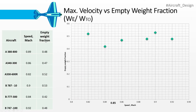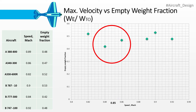Moving to maximum velocity versus empty weight fraction: as a thumb rule, empty weight fraction should range from 0.3 to 0.7. For a large passenger aircraft it lies within 0.4 to 0.6. At the design speed of 0.85 Mach, a circle is drawn and a vertical line through its center is extended as a horizontal line to the y-axis, giving the optimum empty weight fraction.